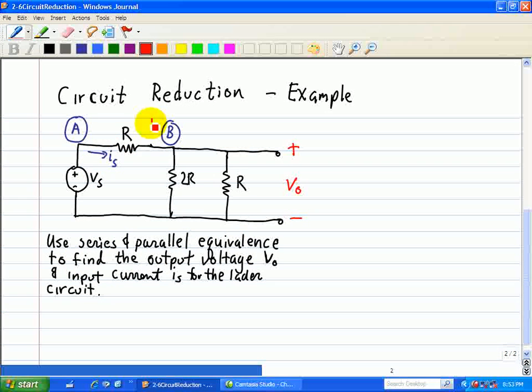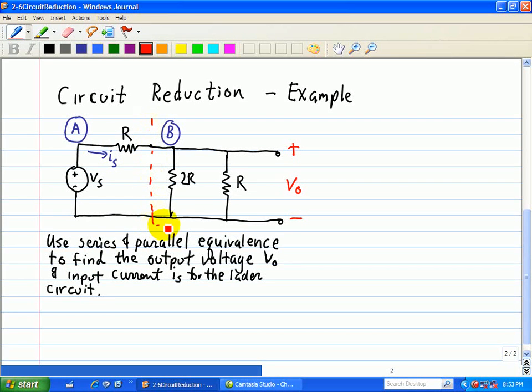So first of all, we want to reduce this circuit with an equivalent resistance, and we note that 2R and R are connected in parallel. So R equivalent for the first case here is 2R, product of the two resistors in parallel, divided by the sum of the two resistors in parallel, and that yields two-thirds R.